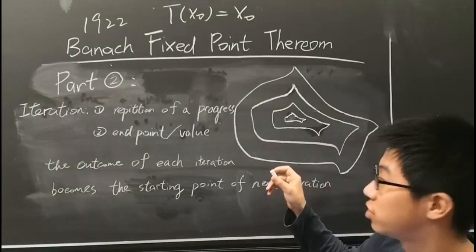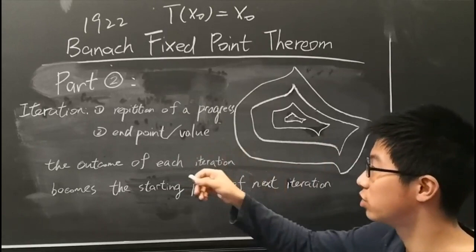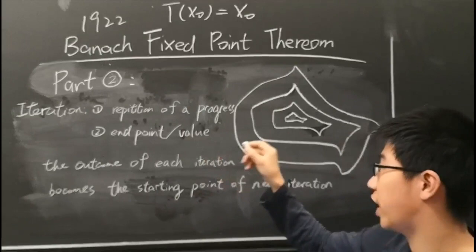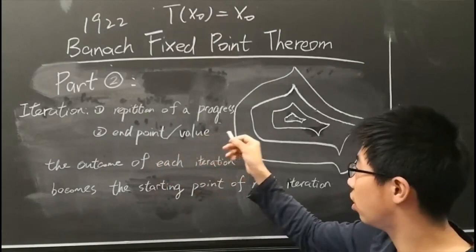First, let's introduce what is iteration. Iteration is a repetition of a process in order to generate a sequence of outcomes. The sequence will approach an endpoint or maybe an end value. Each repetition of the process is a single iteration, and the outcome of each iteration becomes the starting point of next iteration.